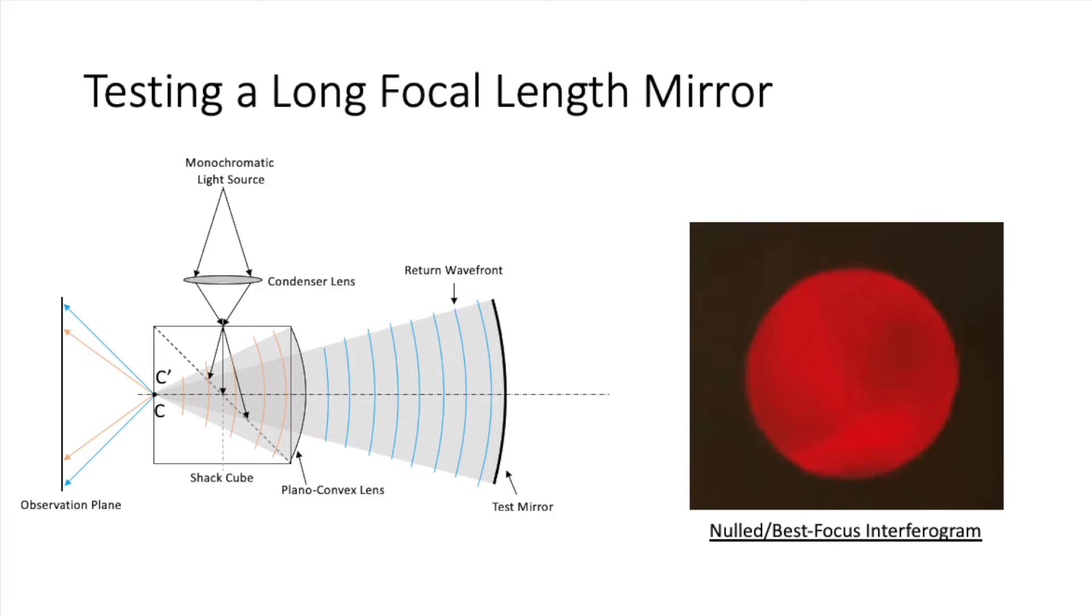First, I used a long focal length reference mirror as the test surface. If the center of curvature of the test mirror perfectly aligns with that of the convex lens and their corresponding surfaces are perfectly spherical, then no fringes should be formed at the interference plane.